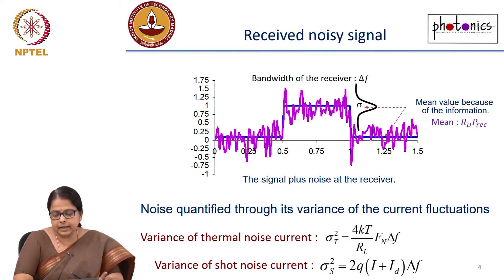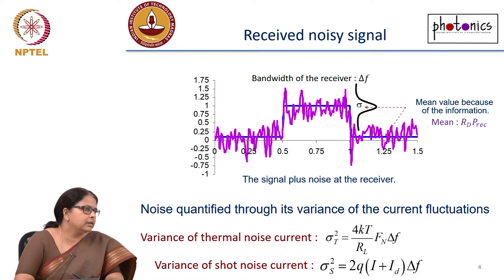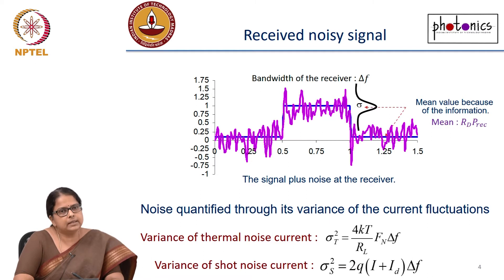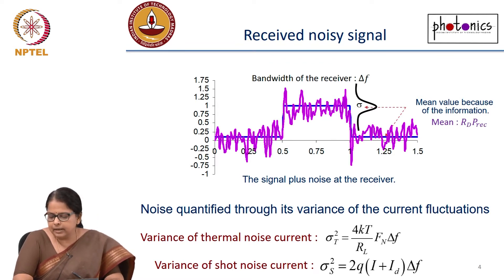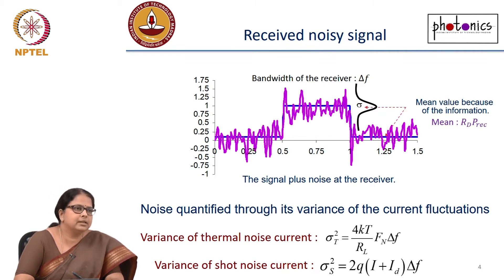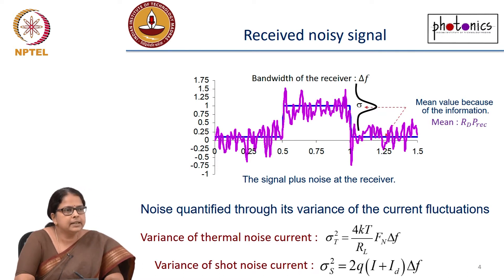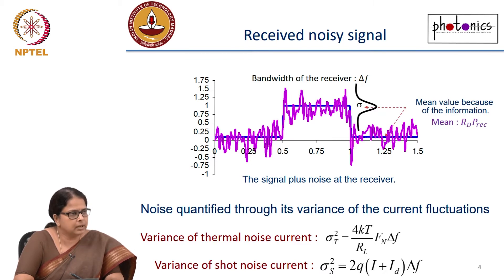We are currently talking only about on-off keyed signals, not phase modulated signals. In an on-off keyed signal, all that is necessary is a direct detection receiver — a receiver which converts input light into a current. The received current has fluctuations, which is the noise. There are two primary sources of noise: shot noise and thermal noise.